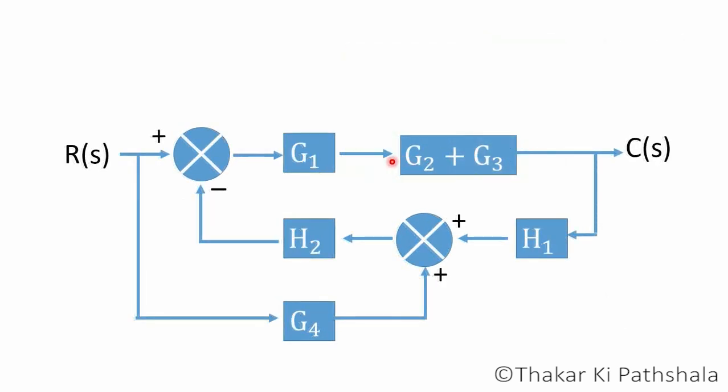By looking at the reduced diagram, we can easily locate the newly created block and the G1 block both now in series. So they can be reduced by applying rule number one,